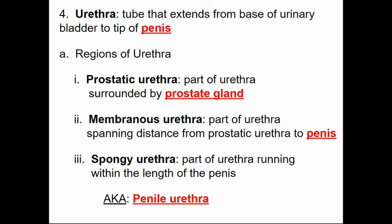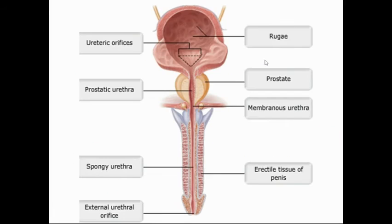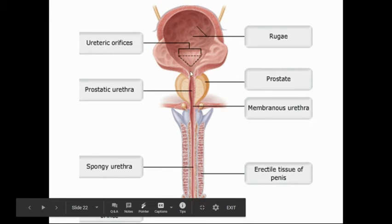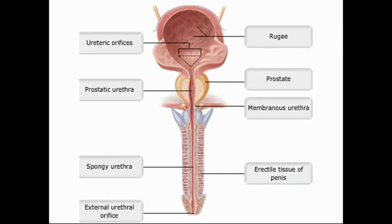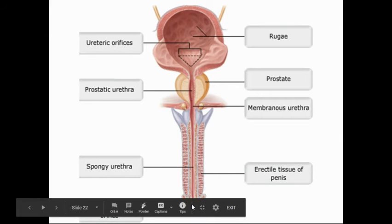The urethra is the tube from the bladder to the tip of the penis. Because of the length of the penis needed for intercourse, it has three regions: the prostatic urethra runs through the prostate gland; the membranous urethra connects it to the spongy urethra (also called the penile urethra), which runs through the length of the penis. The other two regions are more internal.